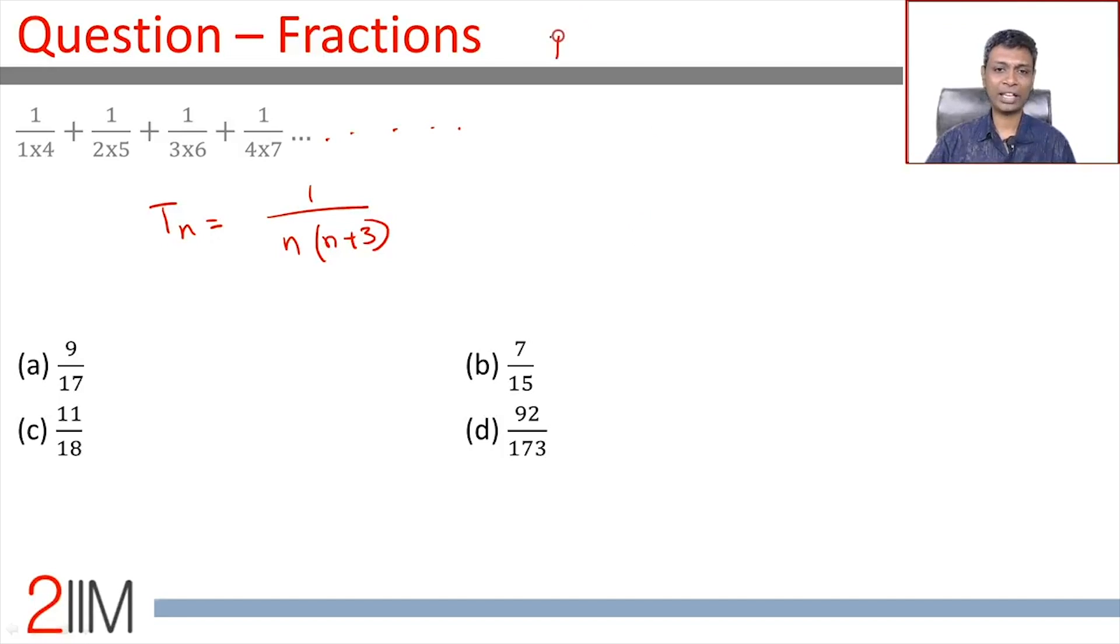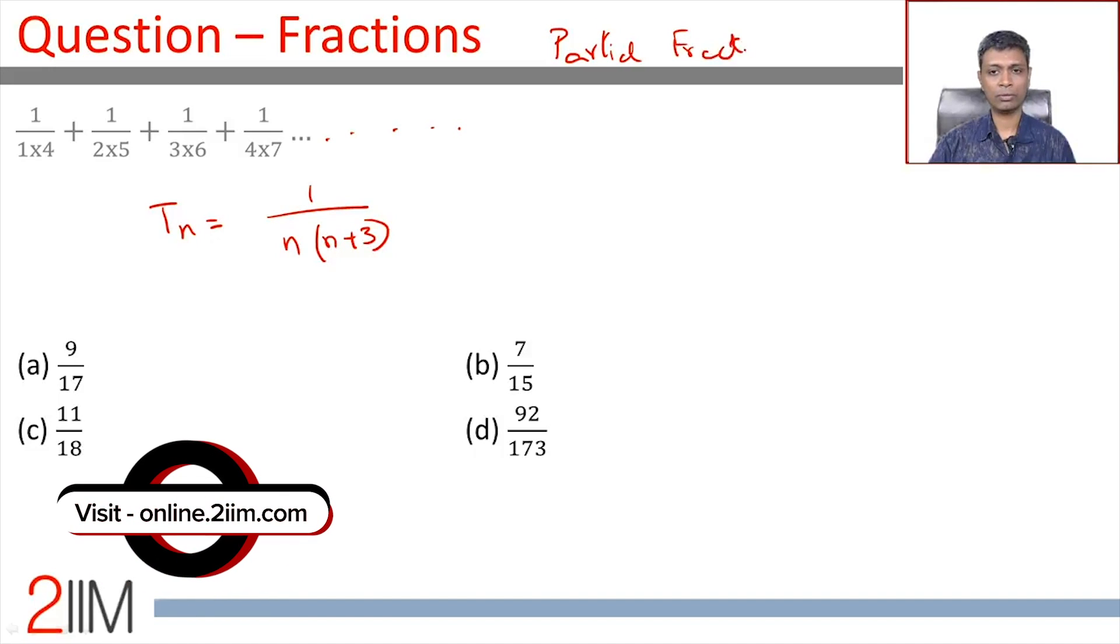We're going to do this by a wonderful method called breaking into partial fractions. We're going to take this general term 1/(n(n+3)) and then break it into partial fractions.